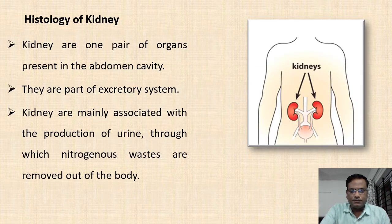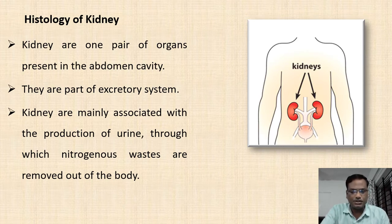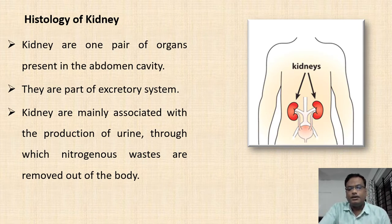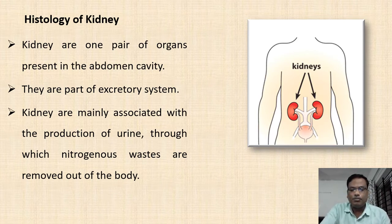Kidneys are one pair of organs found in the abdominal cavity and they are associated with excretion. Kidneys are the organs where urine is produced. Blood is filtered and the nitrogenous wastes are removed in the form of urine. In this way, kidneys are very important organs of the excretory system.